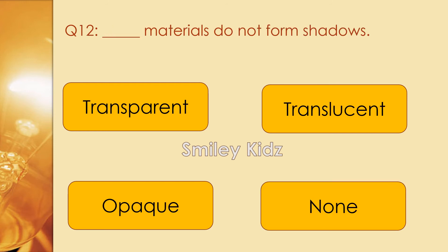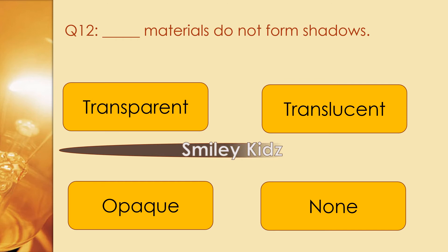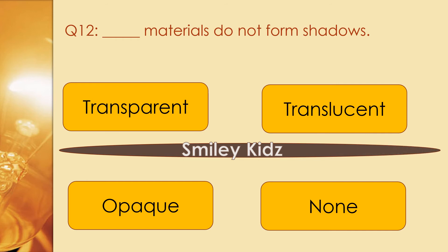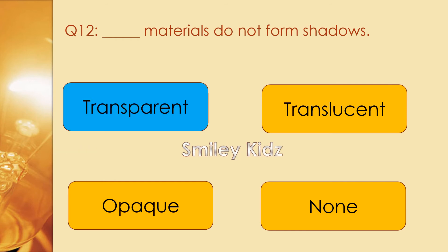Question number 12. Dash materials do not form shadows. Options are transparent, translucent, opaque, and null. The right answer is transparent. Transparent materials do not form shadows.